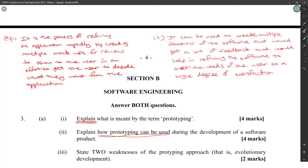How are we getting four marks here? It creates multiple iterations, that's one mark. You get a lot of feedback, that's two marks. It would help refine the software so it meets the needs, three marks. And user satisfaction, four marks. All right, I think there's four marks there.